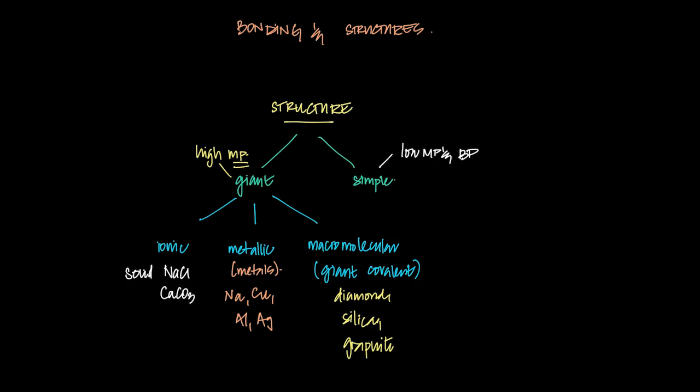The reason we call them giant or simple is because of their properties. So if you know a substance's properties, you can deduce its structure. If something has a high melting point, it must be one of the three giant structures. If something has a low melting point, it has to be a simple structure. Simple structures can also include monoatomic structures like noble gases — helium, argon — that have absolutely no bonding, neither covalent nor ionic.